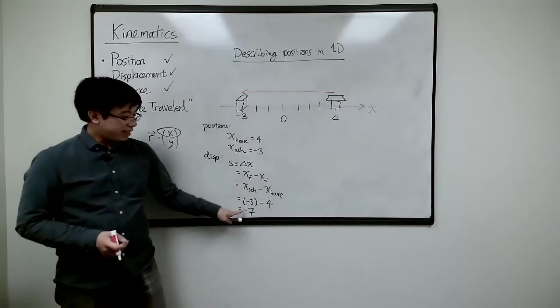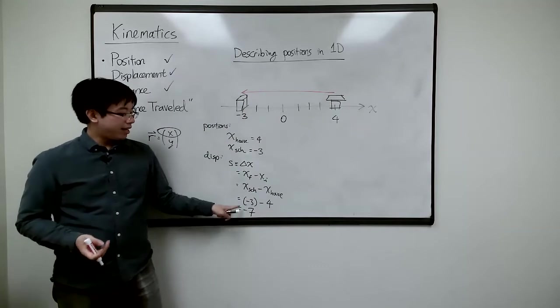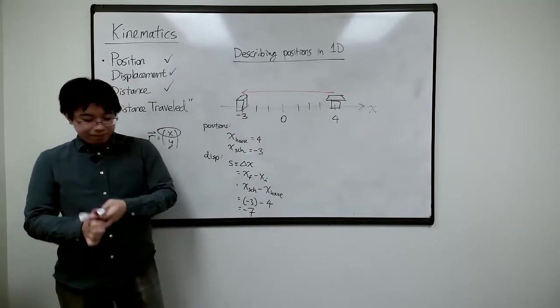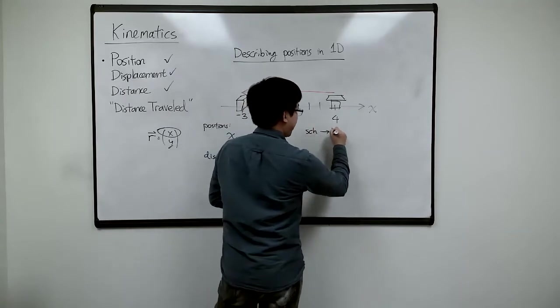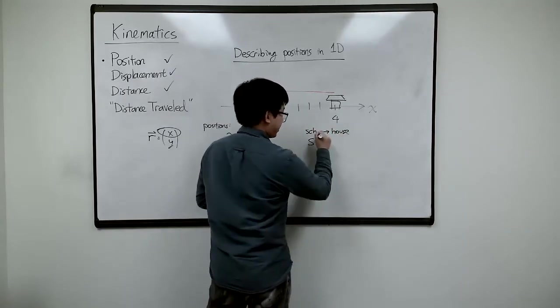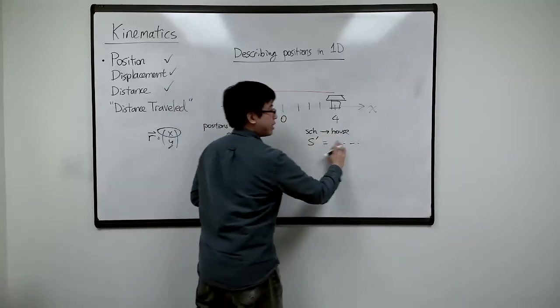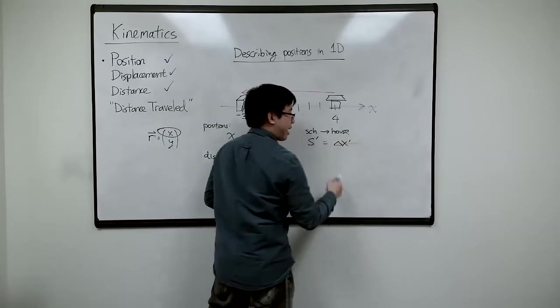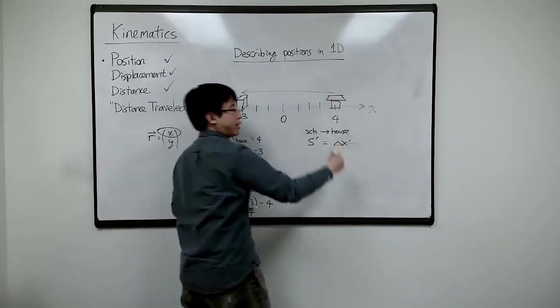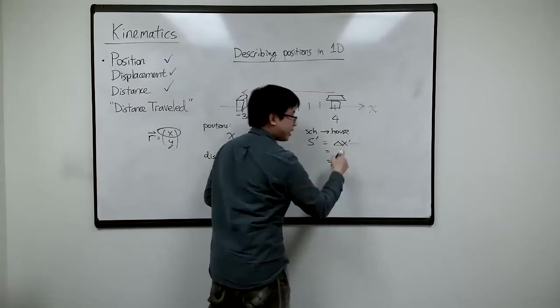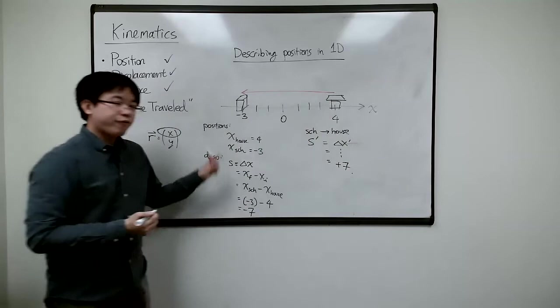So what does the minus sign here means? That basically is telling me the direction. Whether if that's plus or minus, you can flip that around. If I'm going from the school back to my house, right? So let's do S prime. And I will leave it for you to check, right? So this time change, the change is different, right? The initial is starting from here to there, right? Try to plug in the numbers yourself and convince yourself you'll get plus seven this time if you follow the formula.